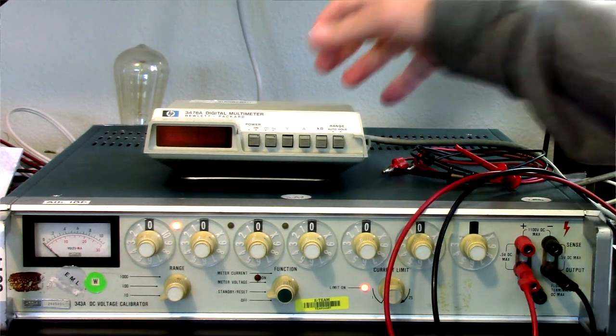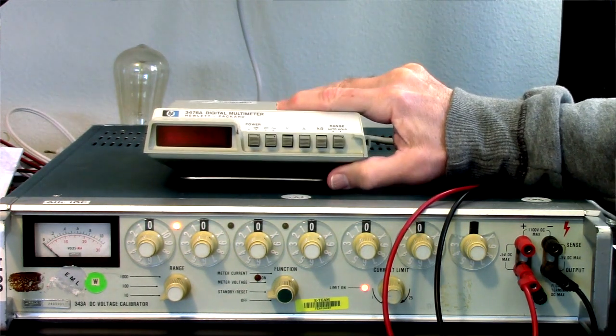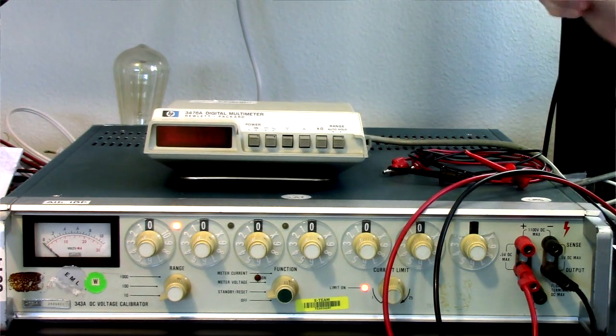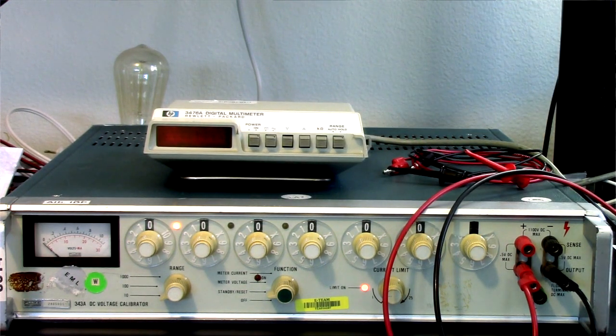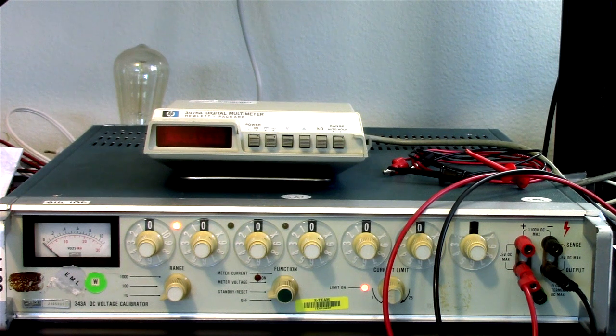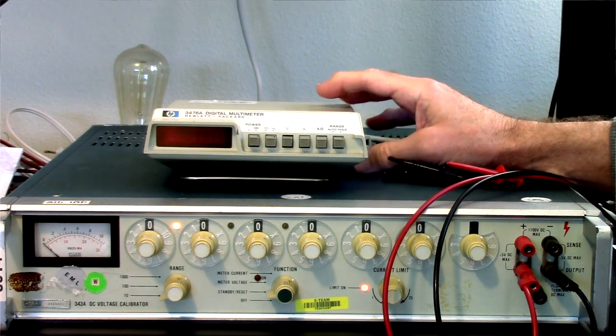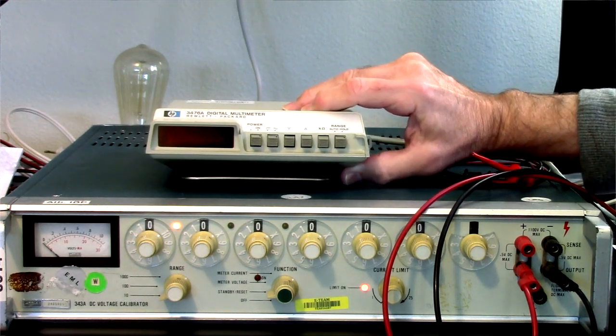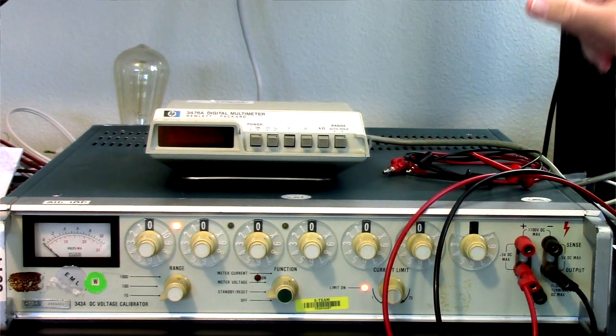Greetings Earthlings! What you see here is an HP 3476A multimeter. These were originally released in 1976 by Hewlett Packard, and the last thing I need probably is another multimeter, but I got this, and so we're going to have a look at it and play with it and see if it even works.